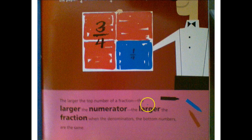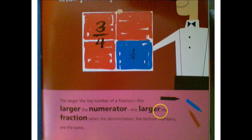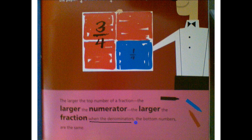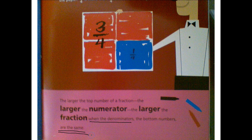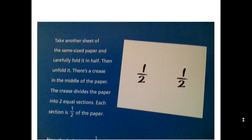The larger the top number of a fraction, the larger the numerator, the larger the fraction when the denominators are the same size. We have a four here and a four here, and that's what makes us able to compare those.